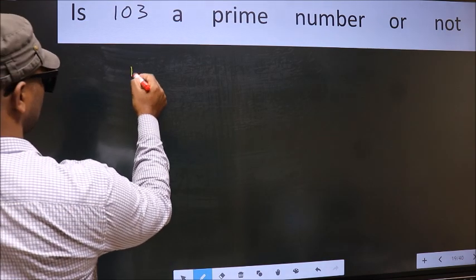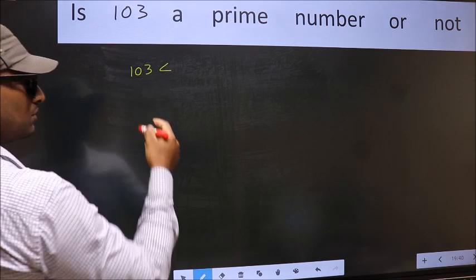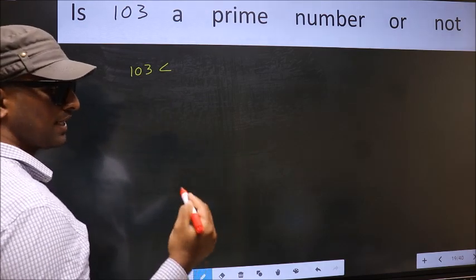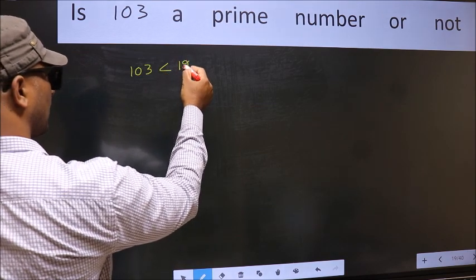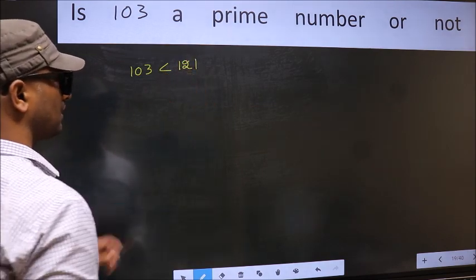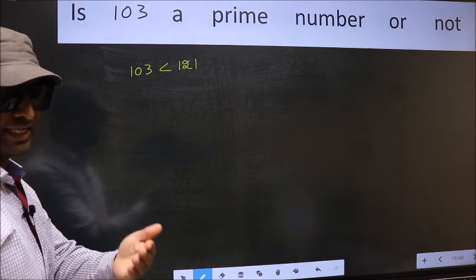Given number is 103. This is close to which perfect square number? This is close to 121, a perfect square number. This is your step 1. Next,